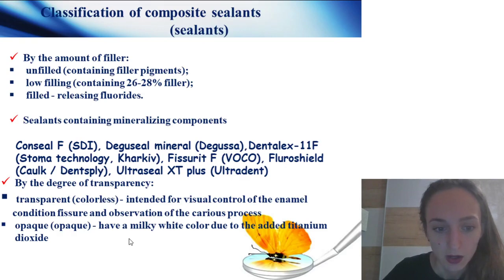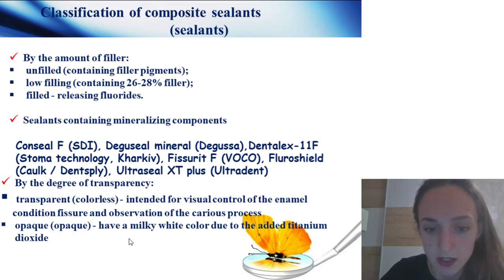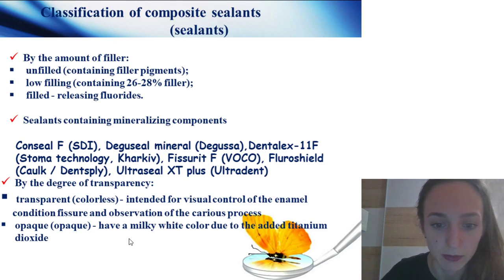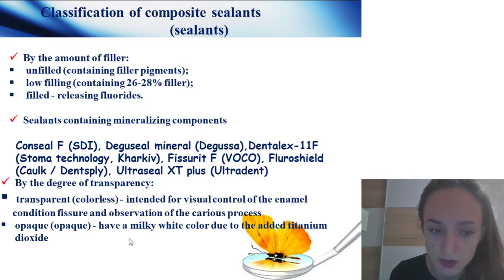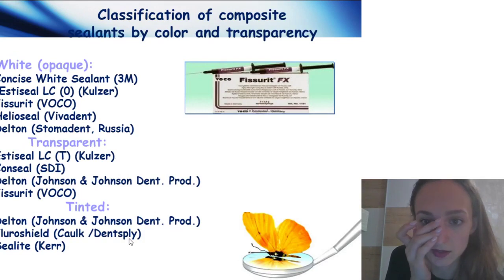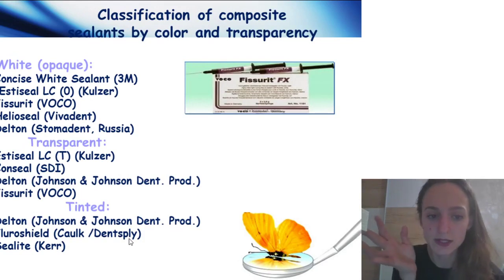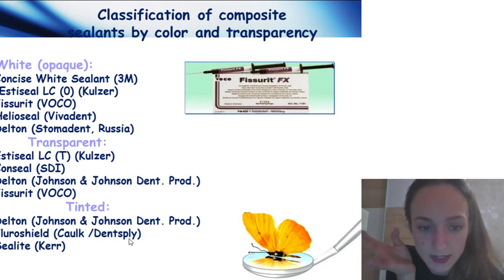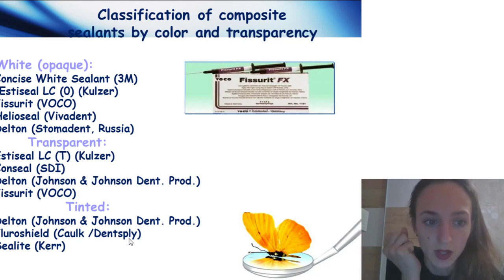Unfilled sealants contain only filler pigments. Low-filled sealants contain 24–26% filler. Sealants containing mineralizing components can be transparent — intended for visual control of the enamel — or have a milky-white color due to titanium dioxide. Also available in black color and tinted versions.